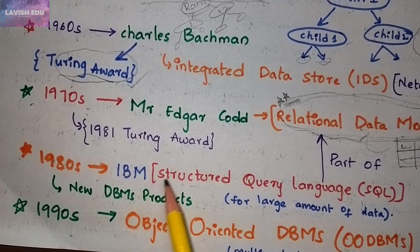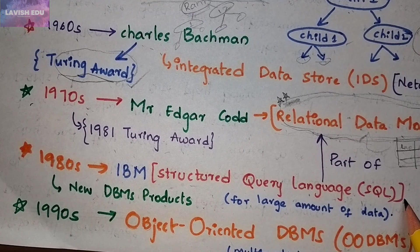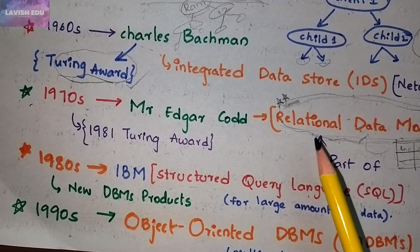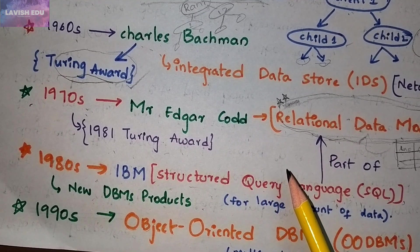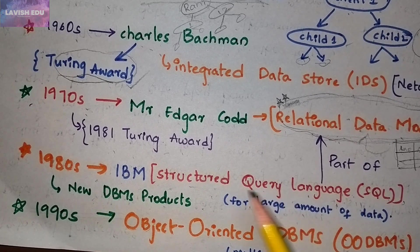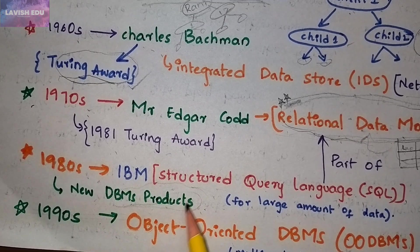In the 1980s, IBM introduced the Structured Query Language (SQL). SQL is also part of the relational data model and makes it easy to retrieve, store, and manage data. When there is a large amount of data to store, the tree-like data structure and integrated data storage become quite difficult to use. SQL is preferred because its syntax is simple and easy to use for managing large chunks of data.